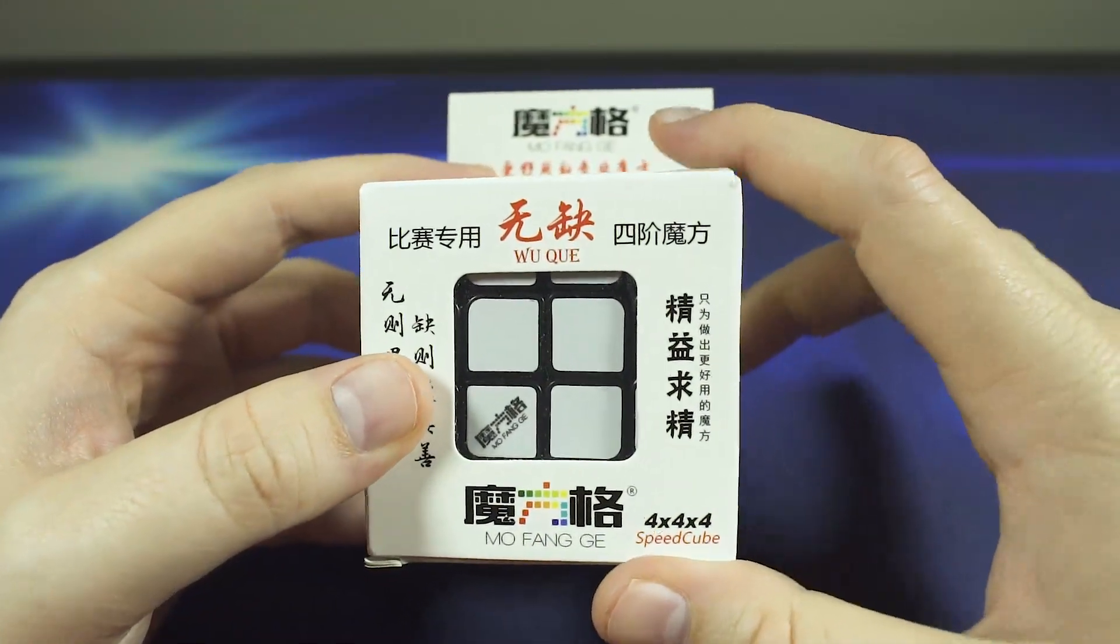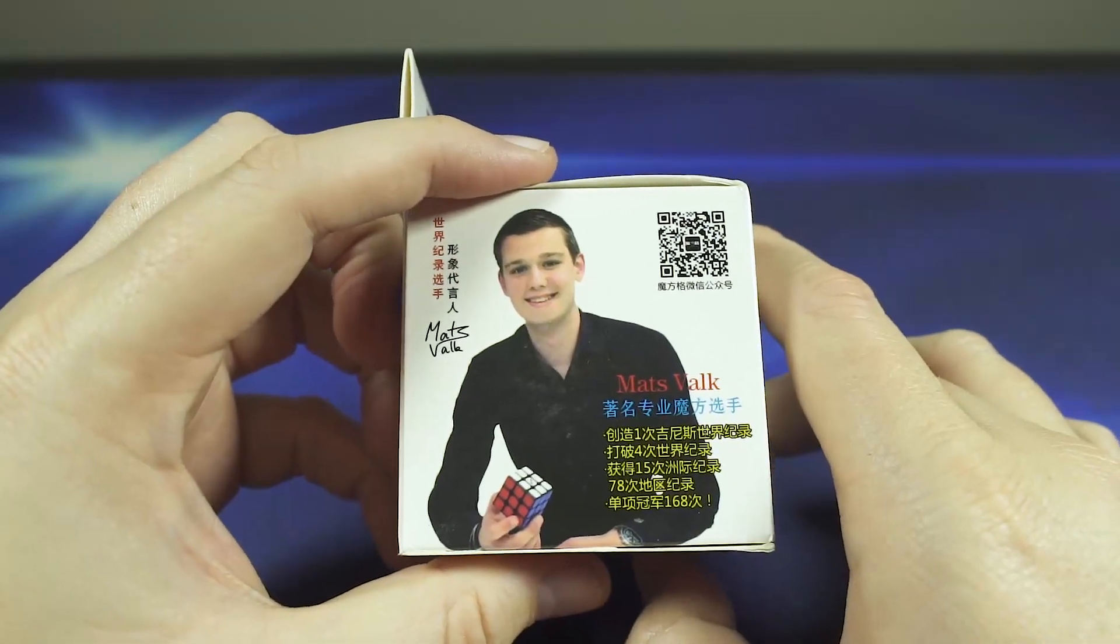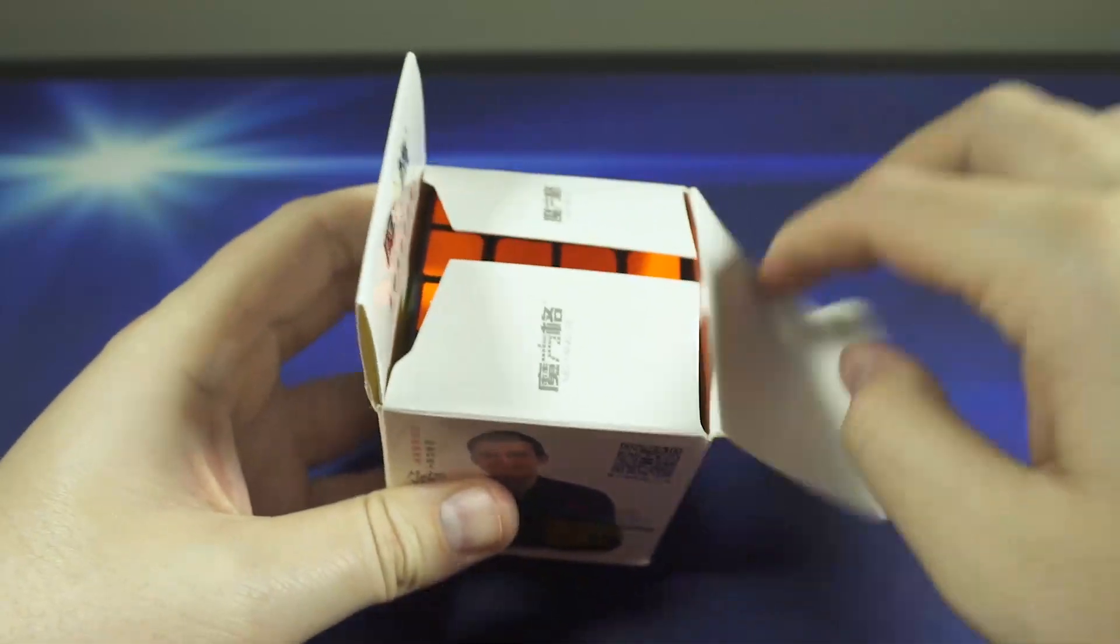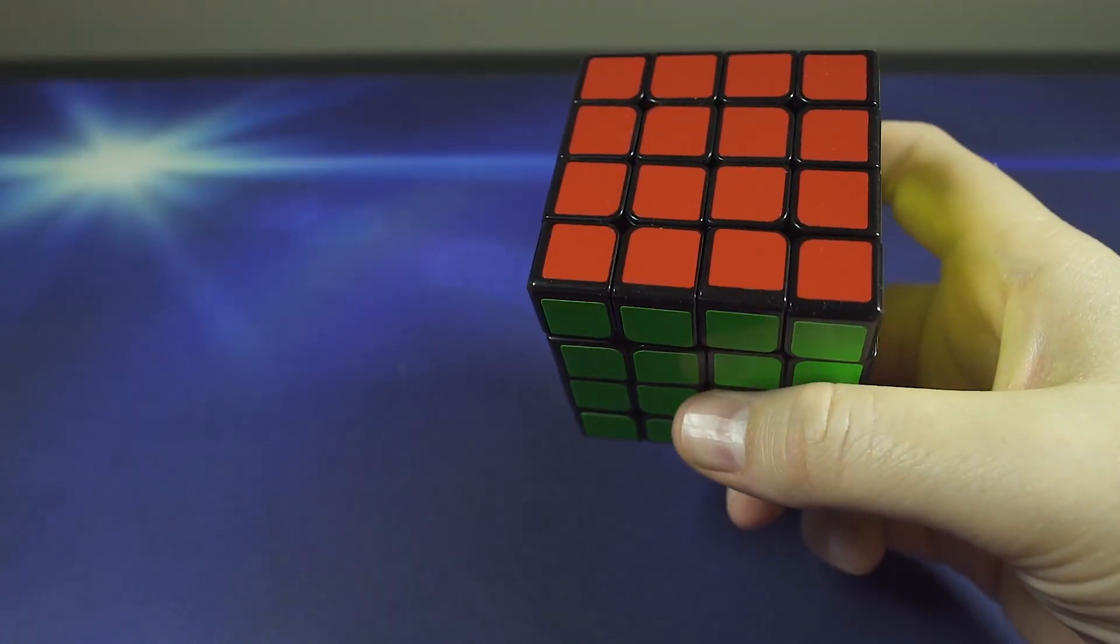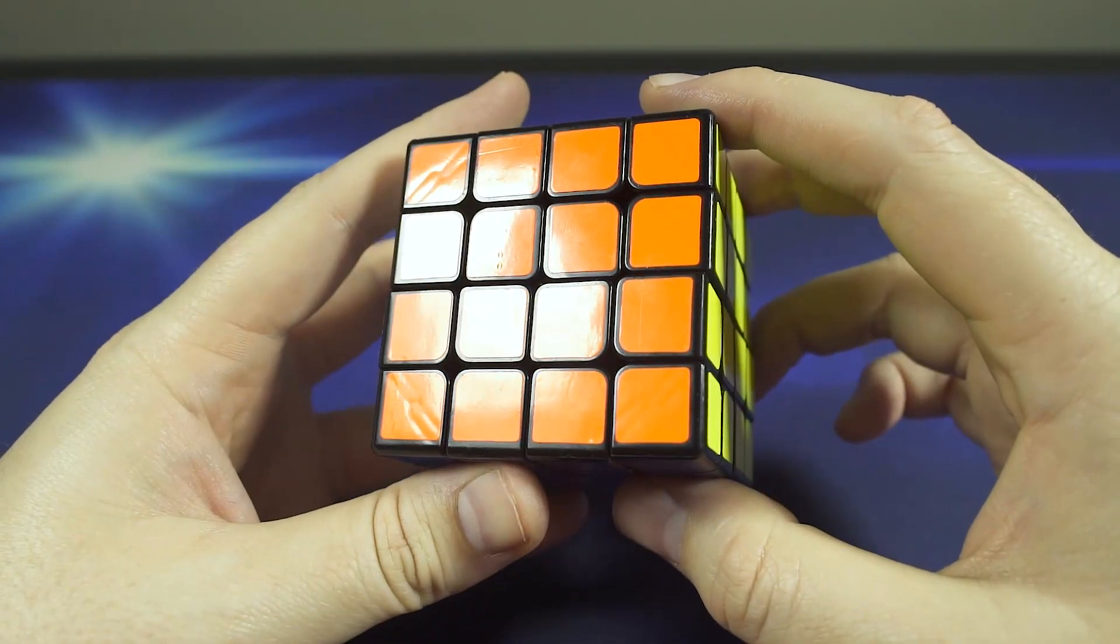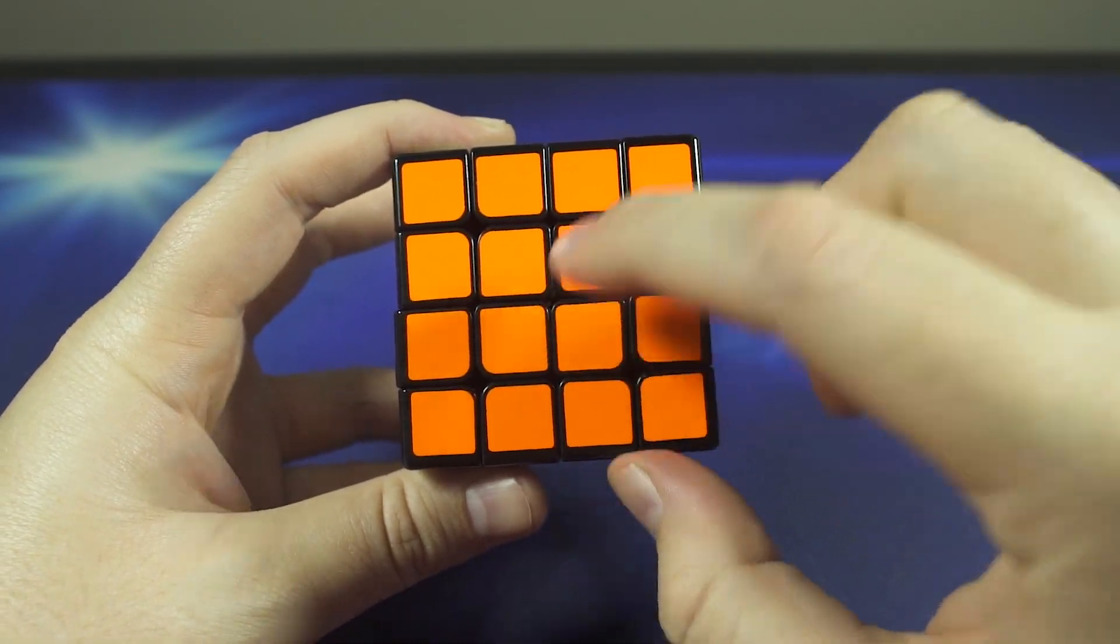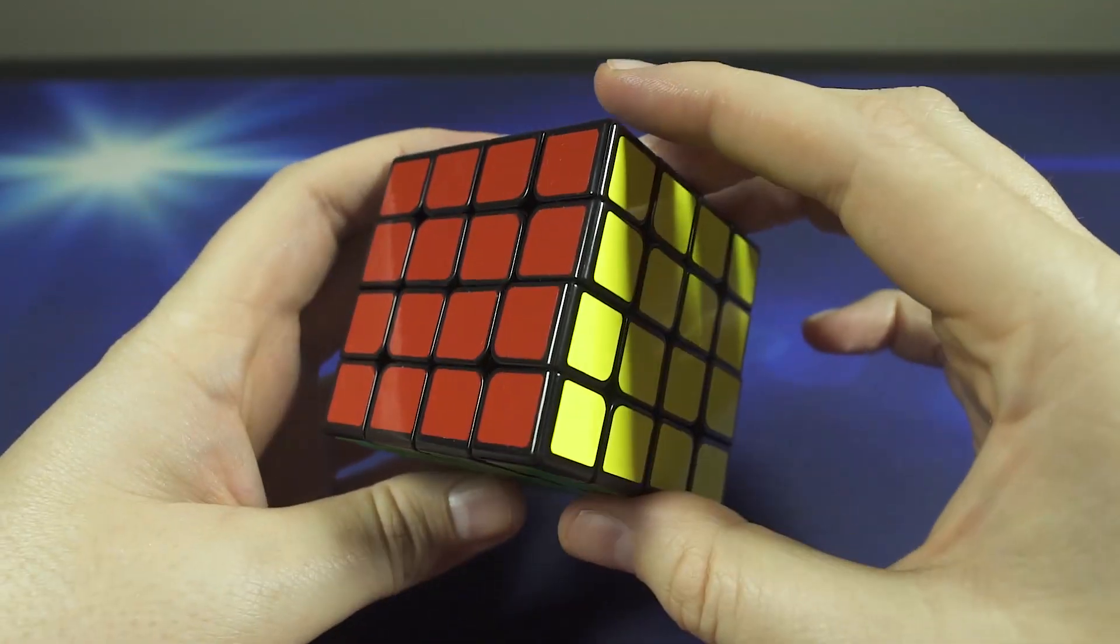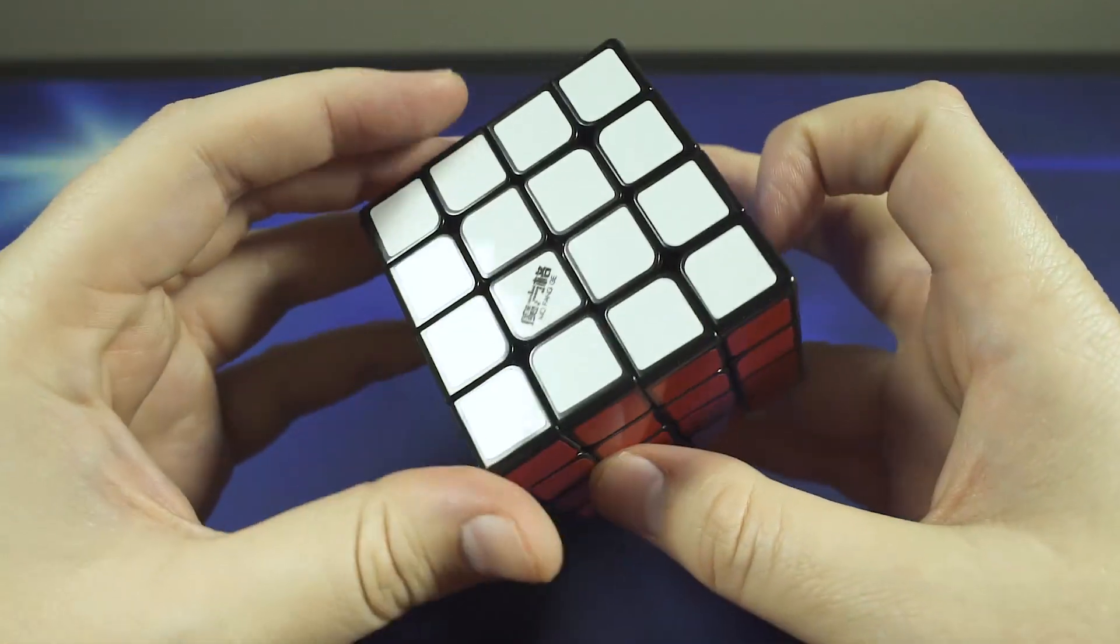Here it is, the Wu Chui from QiYi. We've got Mats on the box—you guys know he's sponsored by QiYi now. Right out of the box, I have to say it resembles the Moyu just because of the florian cuts and the squared off inner pieces.